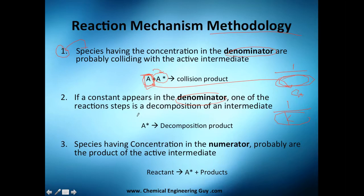If a rate constant k appears in the denominator, one of the reaction steps is the decomposition of the intermediate — the intermediate decomposes itself because of that k. These are general thumb rules; it doesn't mean this is always the case, but in general you can say that. Three: species with concentration in the numerator are probably the product of the active intermediate.